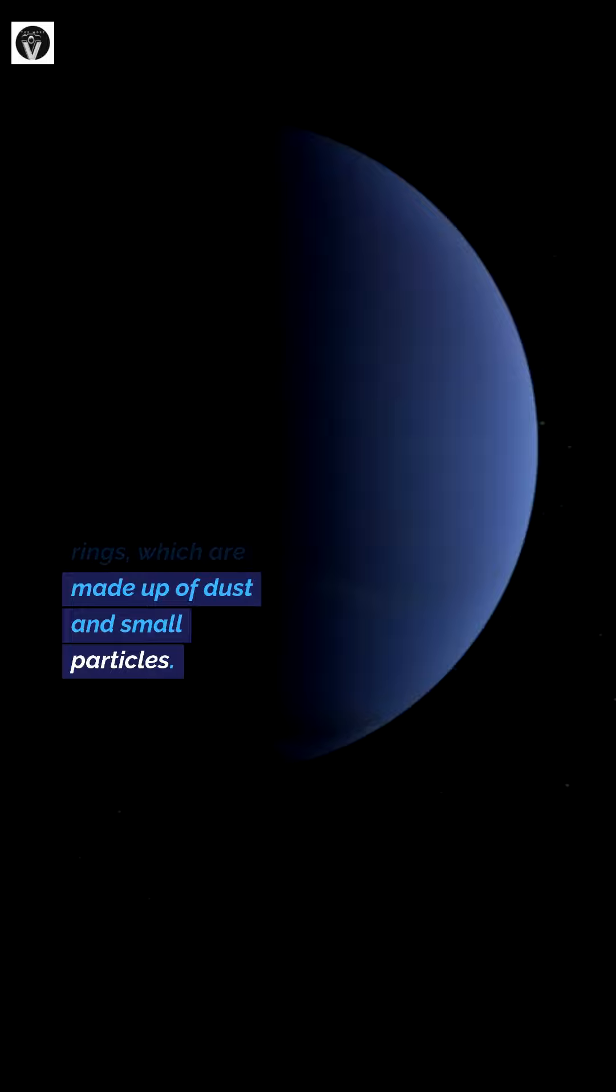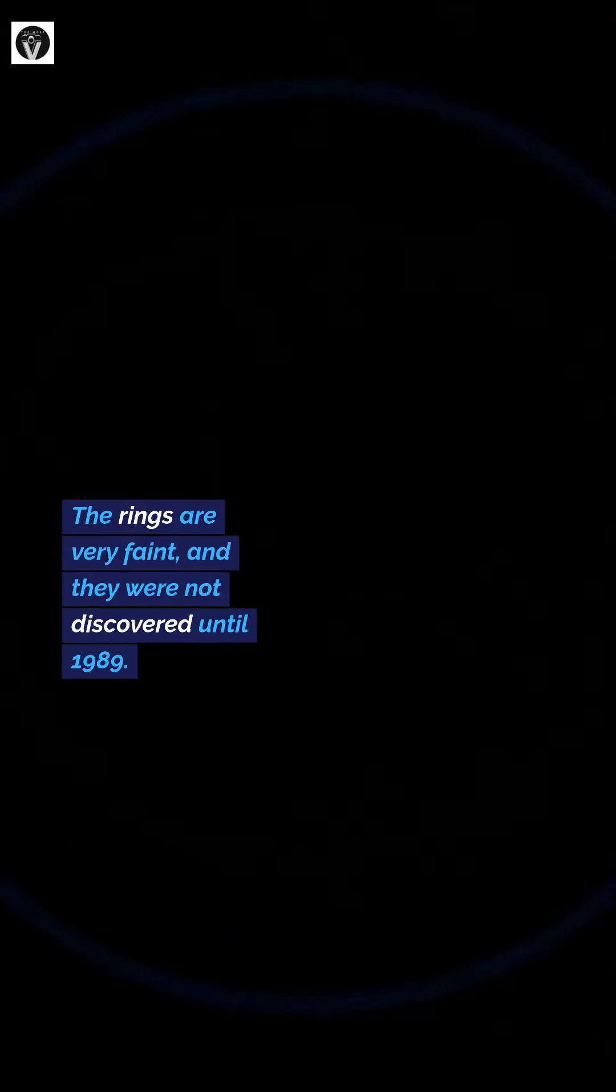Neptune has five rings, which are made up of dust and small particles. The rings are very faint and were not discovered until 1989.